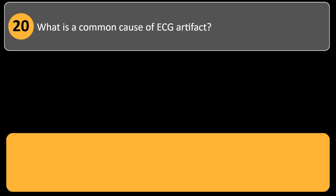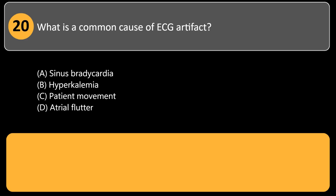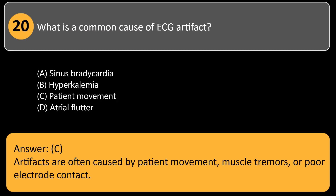What is a common cause of ECG artifact? A. Sinus bradycardia. B. Hyperkalemia. C. Patient movement. D. Atrial flutter. Answer: C. Artifacts are often caused by patient movement, muscle tremors, or poor electrode contact.